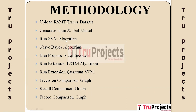The third module is run SVM algorithm. The Support Vector Machine algorithm is applied to the transformed data. SVM is a supervised machine learning algorithm used for classification tasks. It aims to find a hyperplane that best separates different classes of data points, classifying web requests as either normal or potentially malicious. The fourth module is Naive Bayes algorithm — a probabilistic classifier based on Bayes theorem that estimates the likelihood of a web request being an attack based on learned probabilities from the training data.